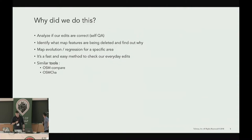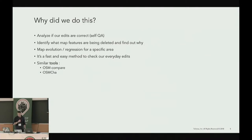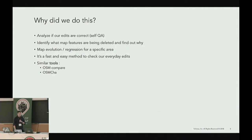Why did we do this? We edit a lot in OSM, and every area is different from another, so we are in a constant learning process. We need to improve our edits because we need to understand local editing patterns. So we created this script to see those patterns, and it also helps us see the evolution of the map — or regression from one month to another — and find out why map features are being deleted. It's a simple and flexible method to better understand local editing patterns and the evolution of the map.